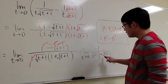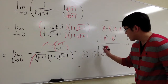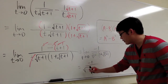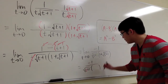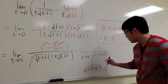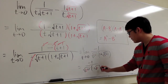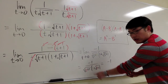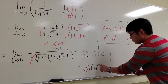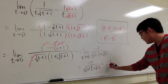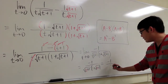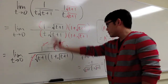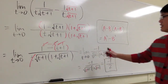Final step: plug 0 into all the t's. I have negative 1 on the top. On the bottom, plugging in 0 gives square root of 0 plus 1, which is square root of 1, times 1 plus square root of 1. That's 1 times 1 plus 1, which equals 1 times 2. So the answer is negative 1 over 2, which is negative one-half. Make sure you know how to do these simplifications — that's the answer.